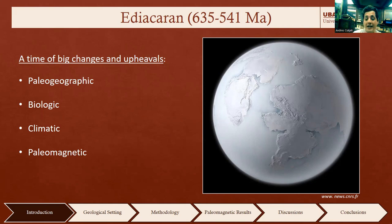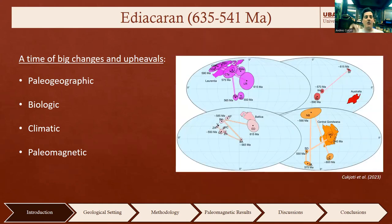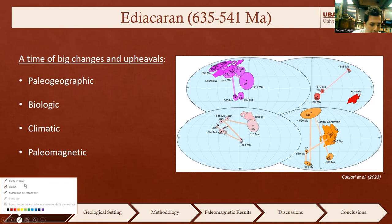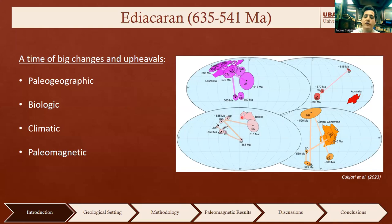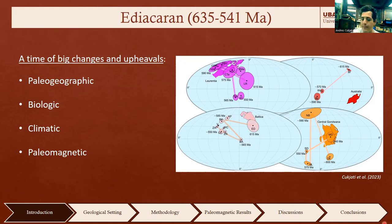The paleomagnetic data is not the exception — in most cratons the paleomagnetic data is very weird. For example, here we have the apparent polar wander path of Baltica for the Ediacaran, and we can see these strange large oscillations — very large displacements in very short periods of time. The same occurs in Laurentia, in Australia, and in central Gondwana.